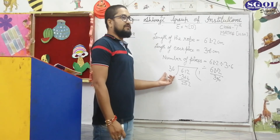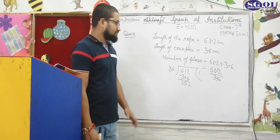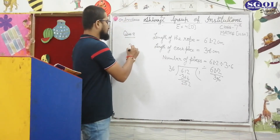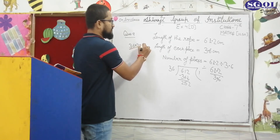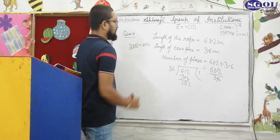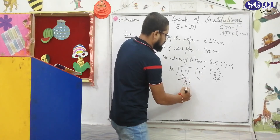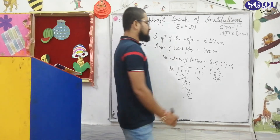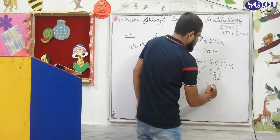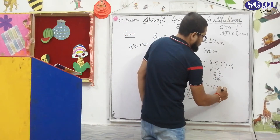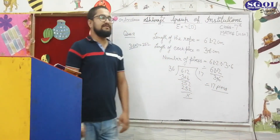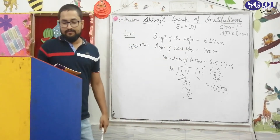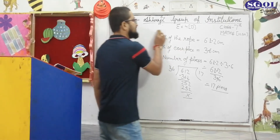Now you have to reach 252 by relating it to 36. When you multiply 36 by 5 you get 180, which is smaller than 252. Then try 36 into 7: you will get 252. So the answer is 7 times, giving 252. That means the number of pieces will be 17. You can cut a total of 17 pieces from a rope of length 61.2 cm. This is the completion of your exercise 4D.